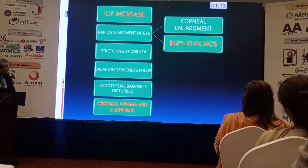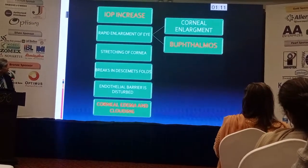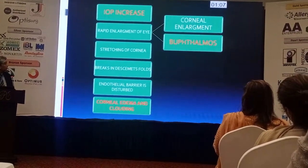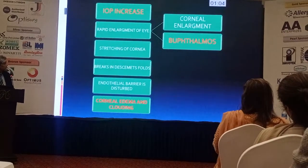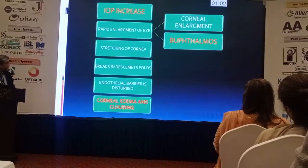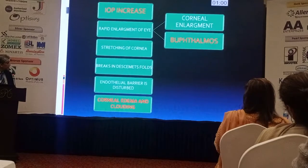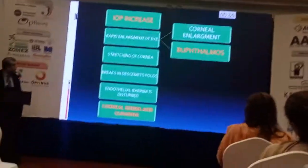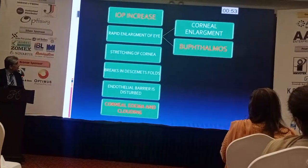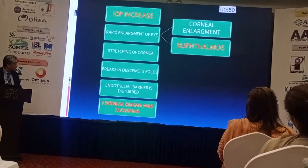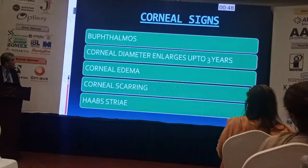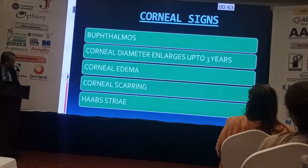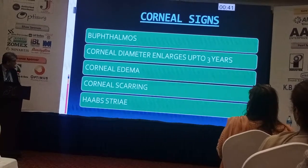The signs are rapid enlargement of the eye causing corneal changes, corneal enlargement, and ultimately bufthalmia. The raised IOP also causes stretching of the cornea, breaks in Descemet's membrane, and disruption of the endothelial barrier, which leads to corneal edema and clouding. The corneal signs again include bufthalmia, corneal edema, increased corneal diameter, corneal scarring, and Haab's striae.